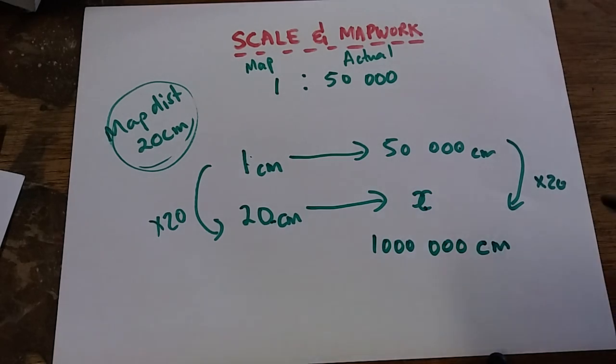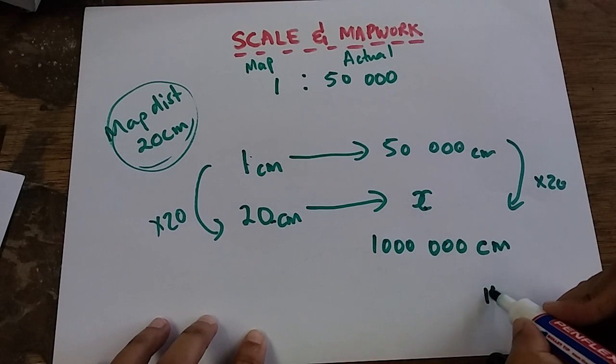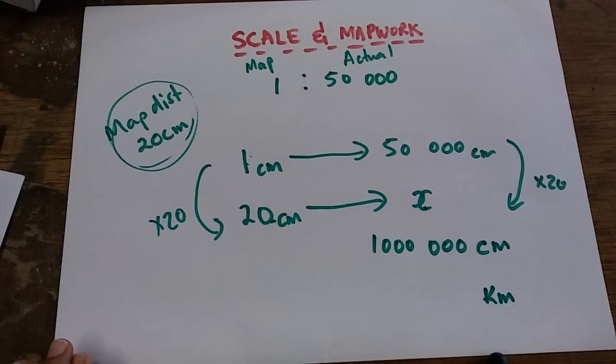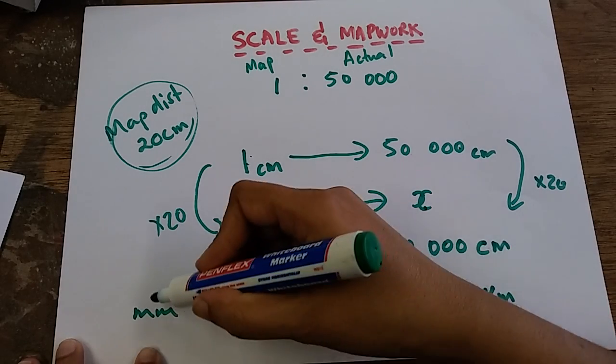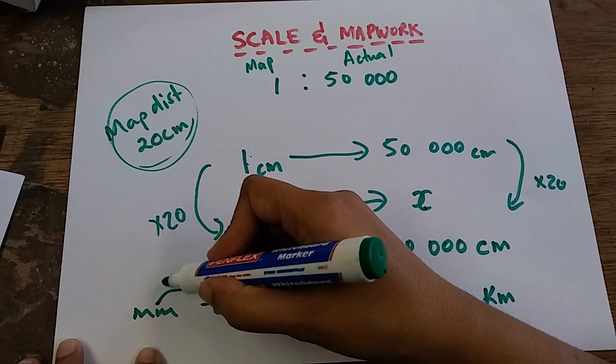Now, actual distance is not measured in centimeters. We're going to convert our centimeters to kilometers. So to go from centimeter into kilometers, I will remind myself: millimeter, centimeter, meter, kilometers. From millimeter to centimeter, I divide by 10. Centimeter to meter is 100. Meter to kilometers is 1,000.